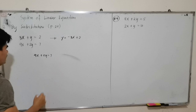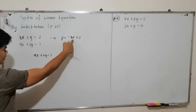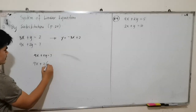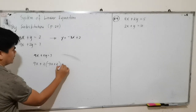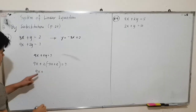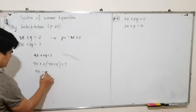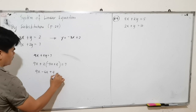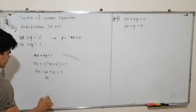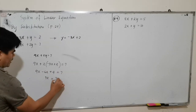The second equation is 9x plus 2y equals 7. Substituting y = negative 3x plus 2, we get: 9x plus 2 times (negative 3x plus 2) equals 7. Expanding: 2 times negative 3x is negative 6x, and 2 times 2 is positive 4. So we have 9x minus 6x plus 4 equals 7.